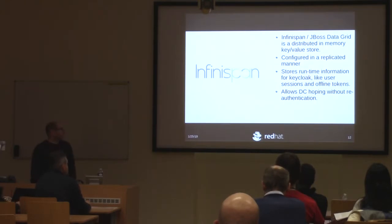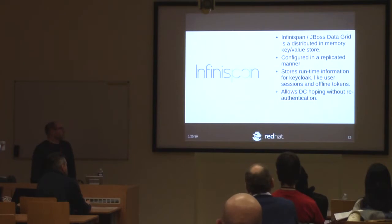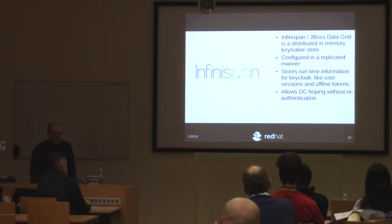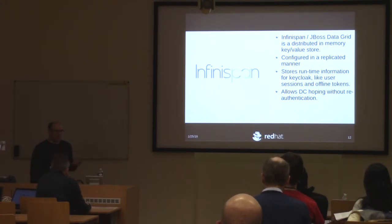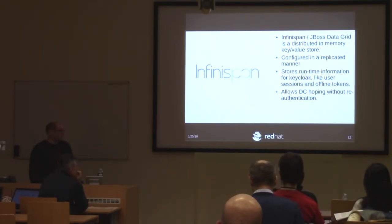InfiniSpan, or JBoss Data Grid, is a distributed in-memory key-value store — similar to Redis or Memcache if you're familiar with those. For our setup, we've configured it in a replicated manner, meaning whatever we store on one site, the other sites get the same information. The InfiniSpan cluster with JDG stores runtime information like user sessions and offline tokens. This allows people to do data center hopping without re-authentication — if your primary data center goes down, you'll still be logged in at a different data center.